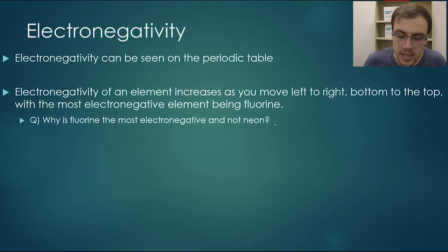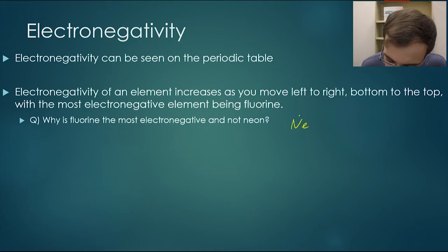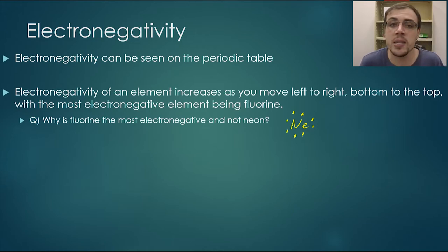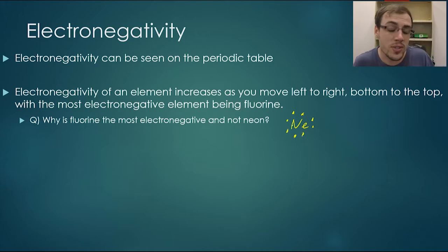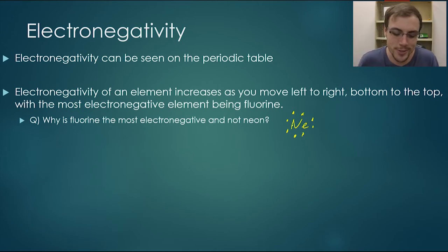The answer is that neon is a noble gas. Because neon has its outermost shell completely filled, it's not electronegative at all — it doesn't want those electrons. It doesn't want to try and steal them because it already has its outermost shell completely filled.